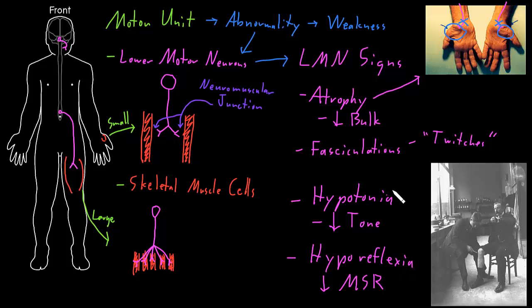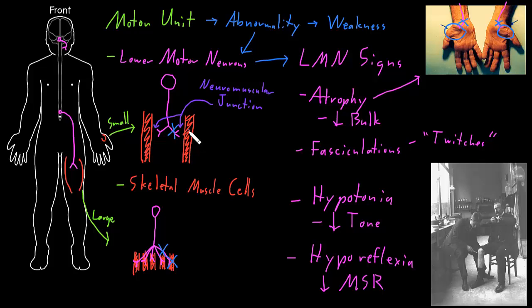The other three signs — atrophy, fasciculations, and hypotonia — we don't understand quite as well. We don't know why you get atrophy with lower motor neuron problems, but for some reason, if skeletal muscle cells aren't getting periodically stimulated by lower motor neurons, these muscle cells degenerate, shrink, or are actually lost. We also don't understand why fasciculations occur, but apparently with loss of periodic input from lower motor neurons, some skeletal muscle cells will just start contracting on their own. Hypotonia is probably because fewer skeletal muscle cells are being told to contract in general, but we're not totally sure about that either.